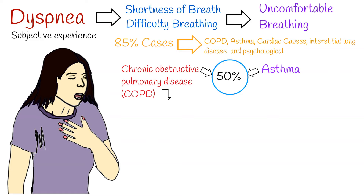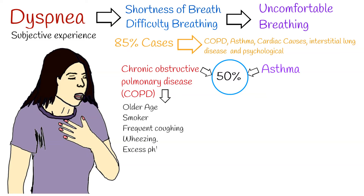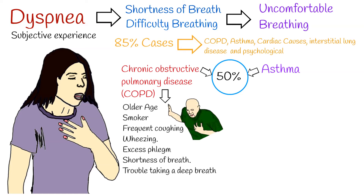Symptoms of chronic obstructive pulmonary disease, COPD, include frequent coughing or wheezing, excess phlegm or sputum, shortness of breath, and trouble taking a deep breath. COPD is associated with long-term smoking and is diagnosed using a simple breathing test called spirometry.